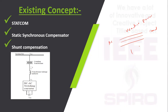The coupling transformer is connected in parallel to the transmission line, and a voltage source inverter is used. DC input is given to the voltage source inverter, which supplies voltage to the transformer. When a reactive power problem occurs, the transformer injects voltage to the load.